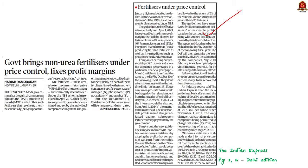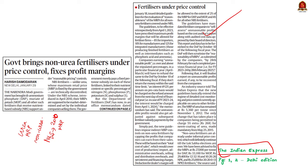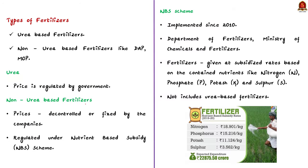This article talks about the government's decision to regulate the prices of non-urea fertilizers. Unlike urea, which has a fixed maximum retail price set by the government, non-urea fertilizers were technically not under price control. The NBS or nutrient-based subsidy scheme implemented in April 2010 allowed companies to set market-determined prices for non-urea fertilizers. The recent decision brings non-urea fertilizers under price control, with the government fixing the profit margin. There are two types of fertilizers in India: urea-based and non-urea-based like DAP (di-ammonium phosphate) and MOP (muriate of potassium).